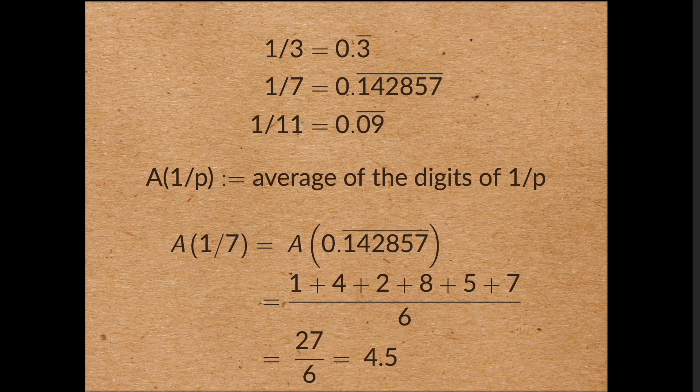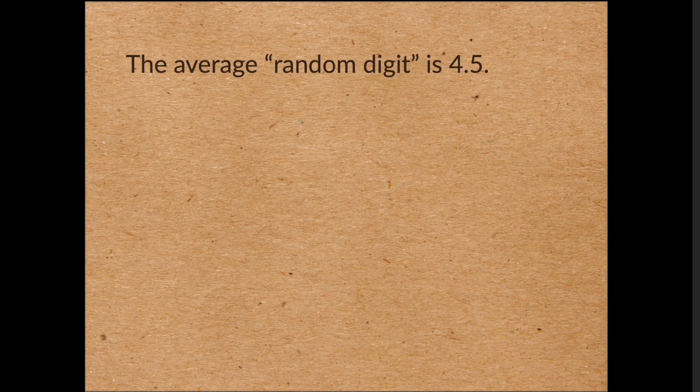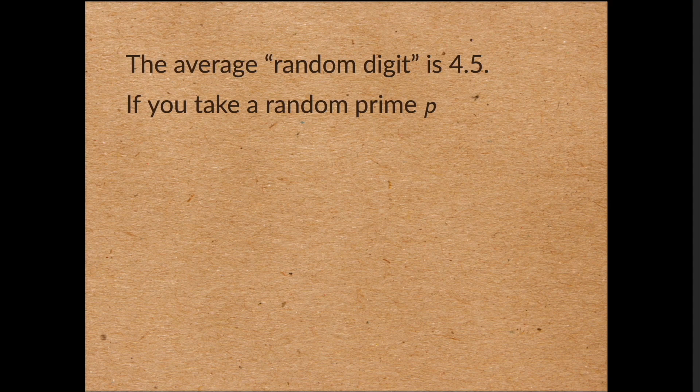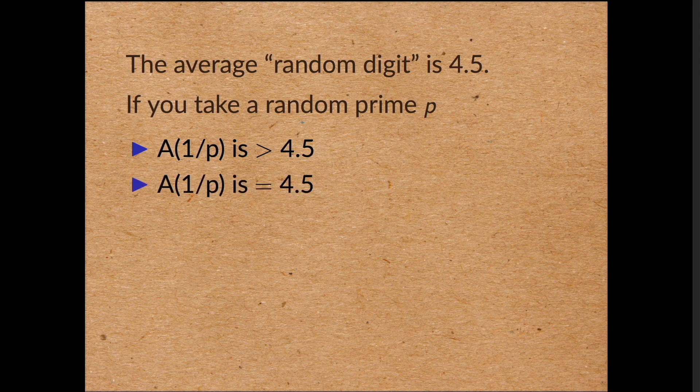If you choose a random set of digits from 0 to 9, the expected average of those digits will be 4.5. So if you take the decimal expansion of 1 over p for a prime p, three possible things can happen. The average is more than 4.5, the average is equal to 4.5, or the average is less than 4.5.